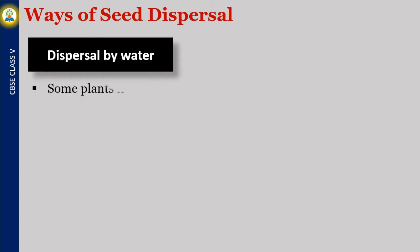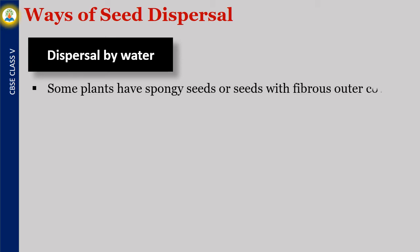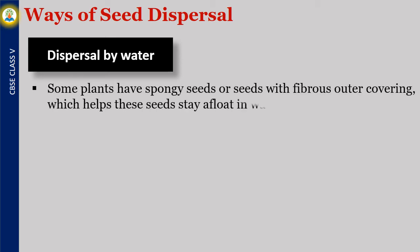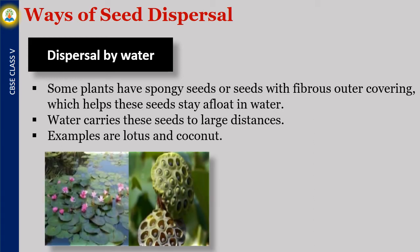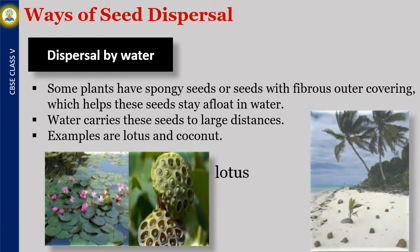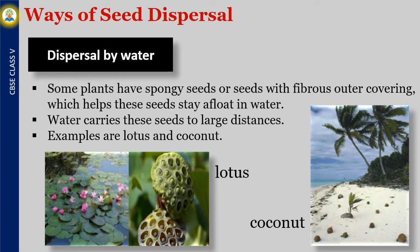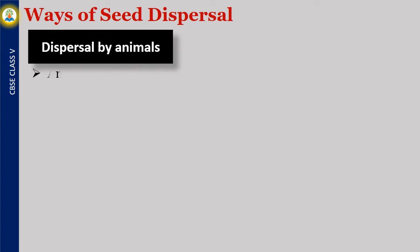Dispersal by water. Some plants have spongy seeds or seeds with fibrous outer covering, which helps these seeds stay afloat in water. Water carries these seeds to large distances. Examples are lotus and coconut.